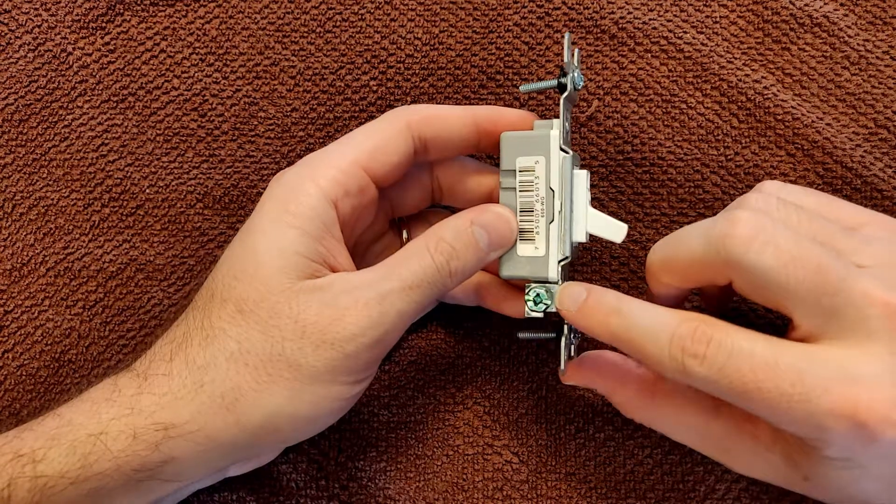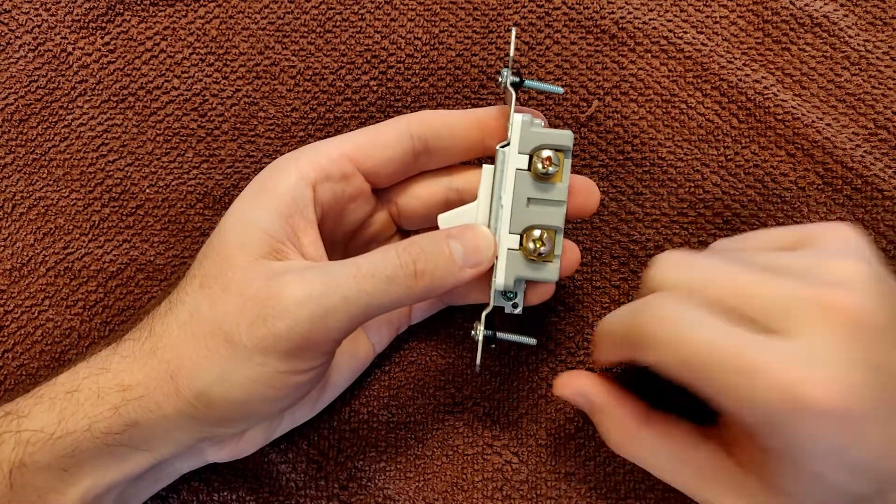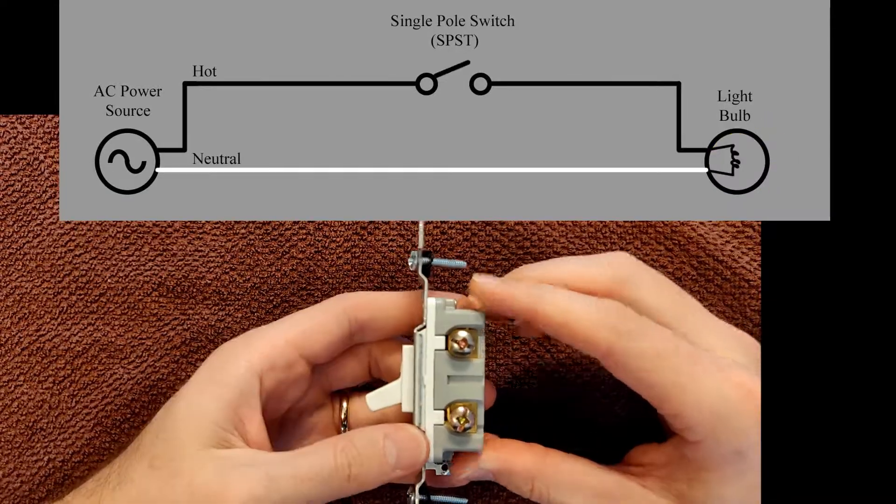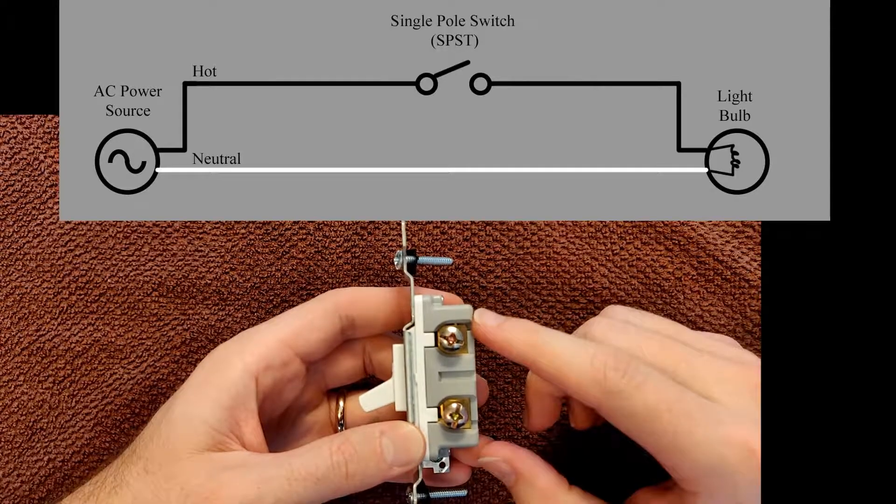A single-pole switch has one ground screw connected to the body and two hot screws. The power comes in at one hot screw, the switch turns it on or off, then the power goes out at the other screw towards your light fixture.